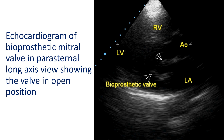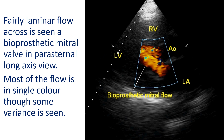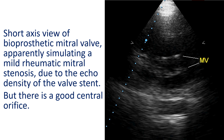Stentless valves have a larger orifice than stented valves. This is the short axis view of the bioprosthetic mitral valve, apparently simulating a mild rheumatic mitral stenosis due to the echo density of the valve stent, but there is a good central orifice.